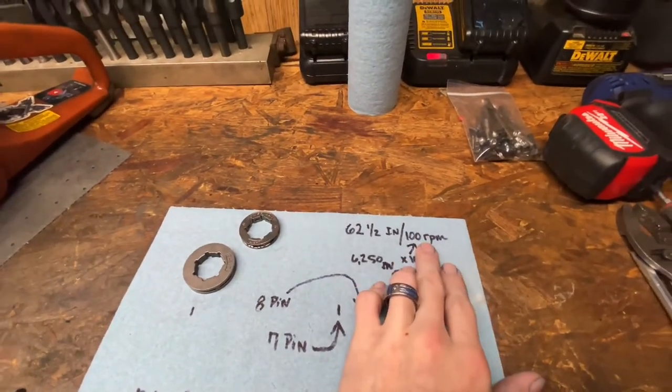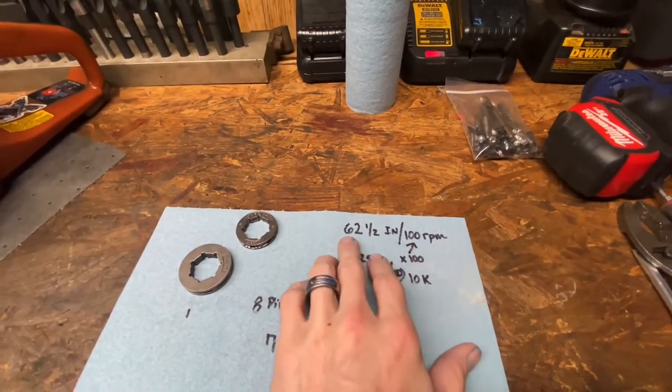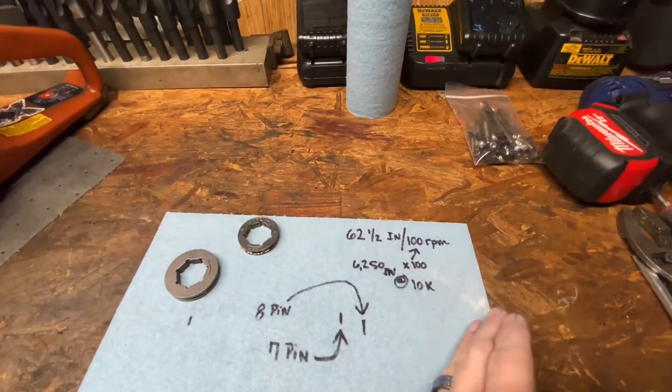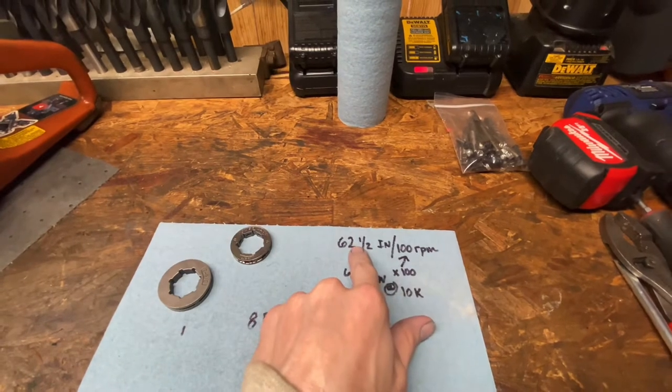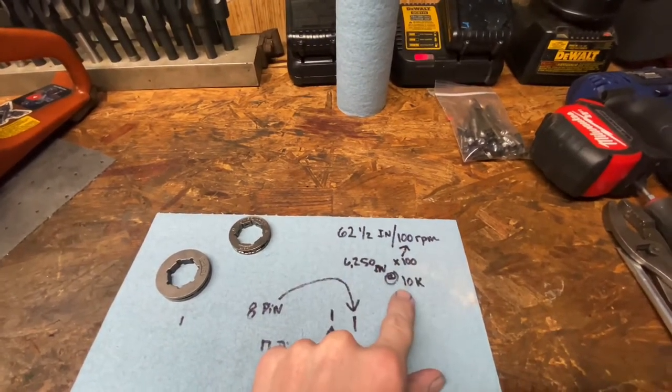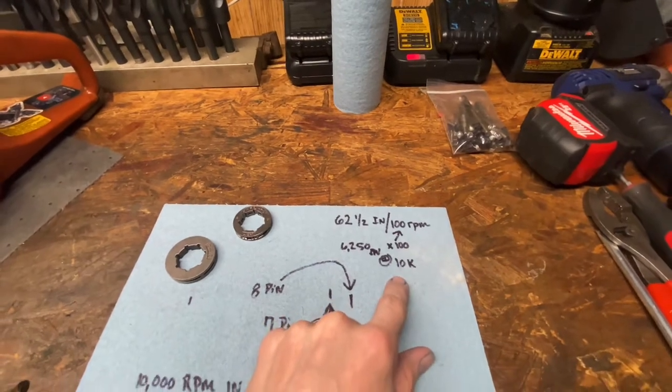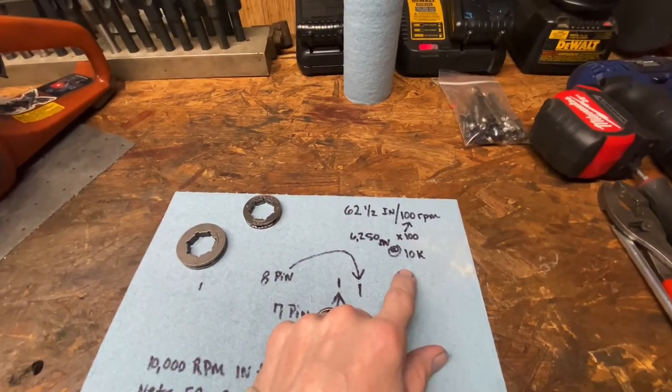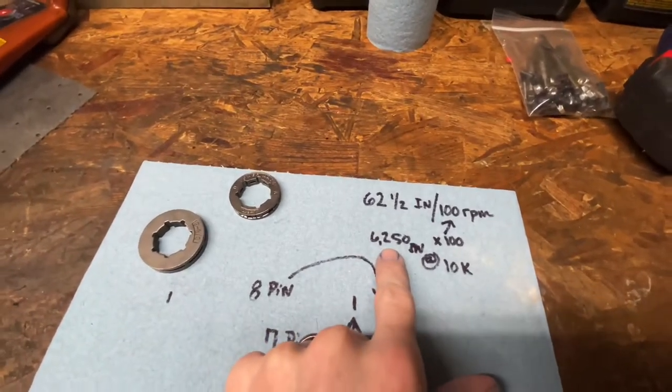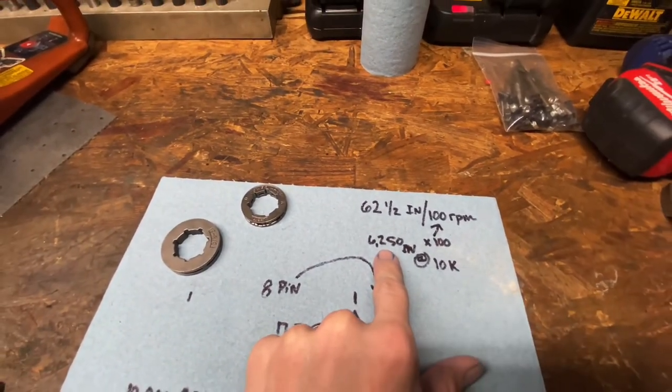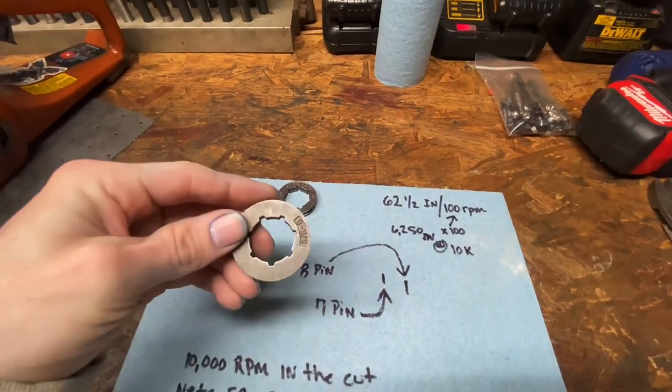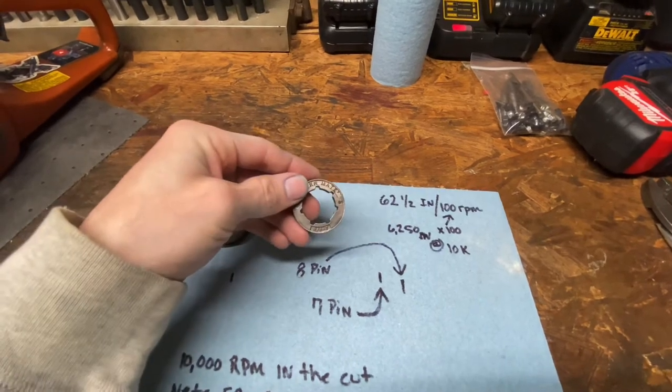So in 100 RPMs, that 8-pin's gonna move the chain 62 and a half more inches. For every 100 RPM you figure in a cut, if you're at 10,000 RPMs in the cut, your chain's moving 6,250 more inches with the 8-pin versus the 7.